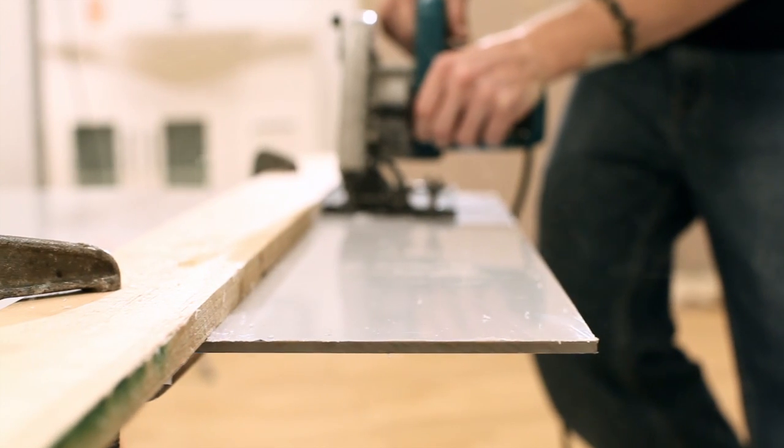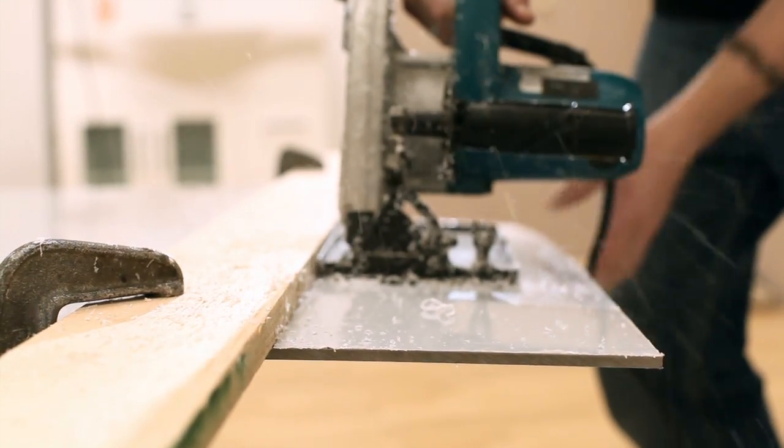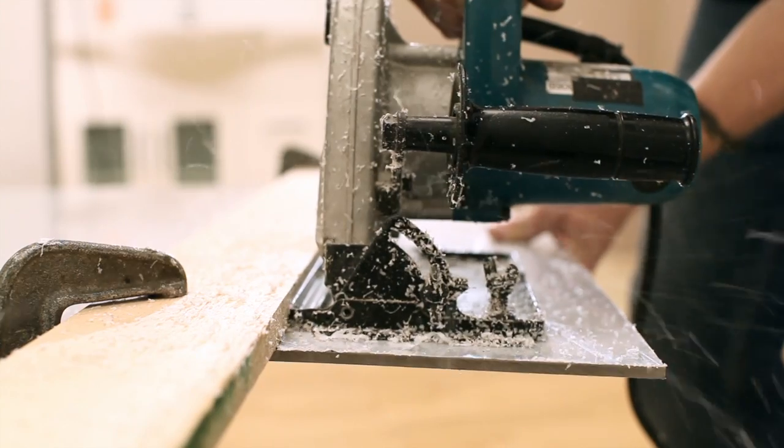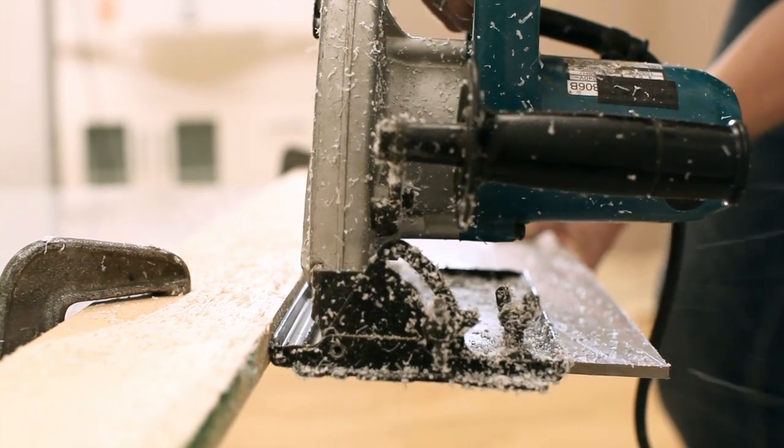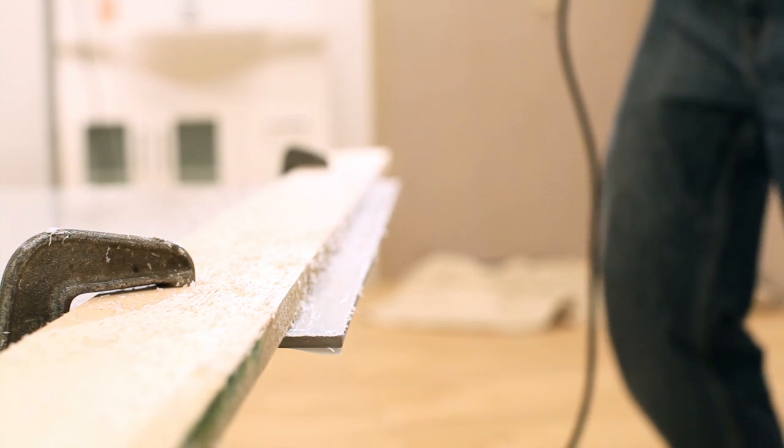If you're using a portable circular saw, cut with the rear colour side of the Xenolite Plus sheet facing upwards. If you're using a fixed table saw, you should cut the sheet with the rear colour side facing downwards.